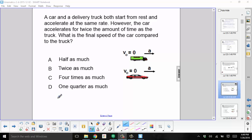A car and a delivery truck both start from rest and accelerate at the same rate. However, the car accelerates for twice the amount of time as the truck. What is the final speed of the car compared to the truck?